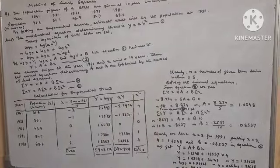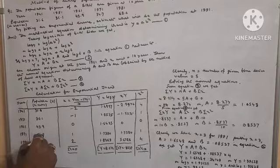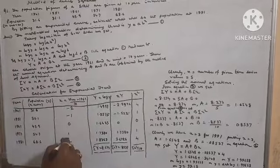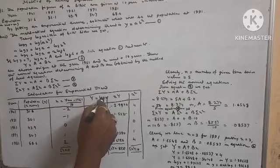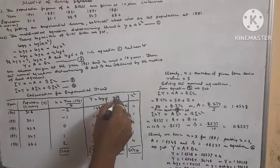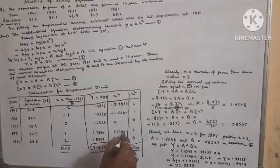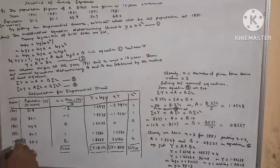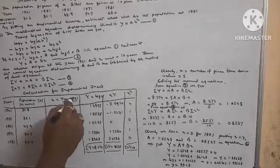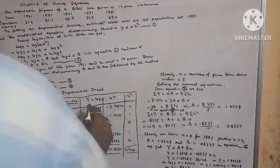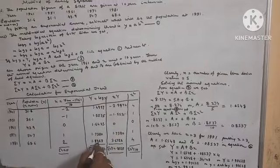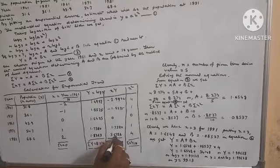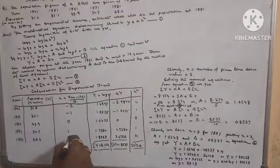x² = 0² = 0. For year 1971, population y = 54.7. x = (1971 − 1961) / 10 = 1. Capital Y = log 54.7 = 1.7380. x·Y = 1.7380 × 1 = 1.7380. x² = 1. For year 1981, population y = 68.6. x = (1981 − 1961) / 10 = 2. Capital Y = log 68.6 = 1.8363. x·Y = 1.8363 × 2 = 3.6726. x² = 2² = 4.